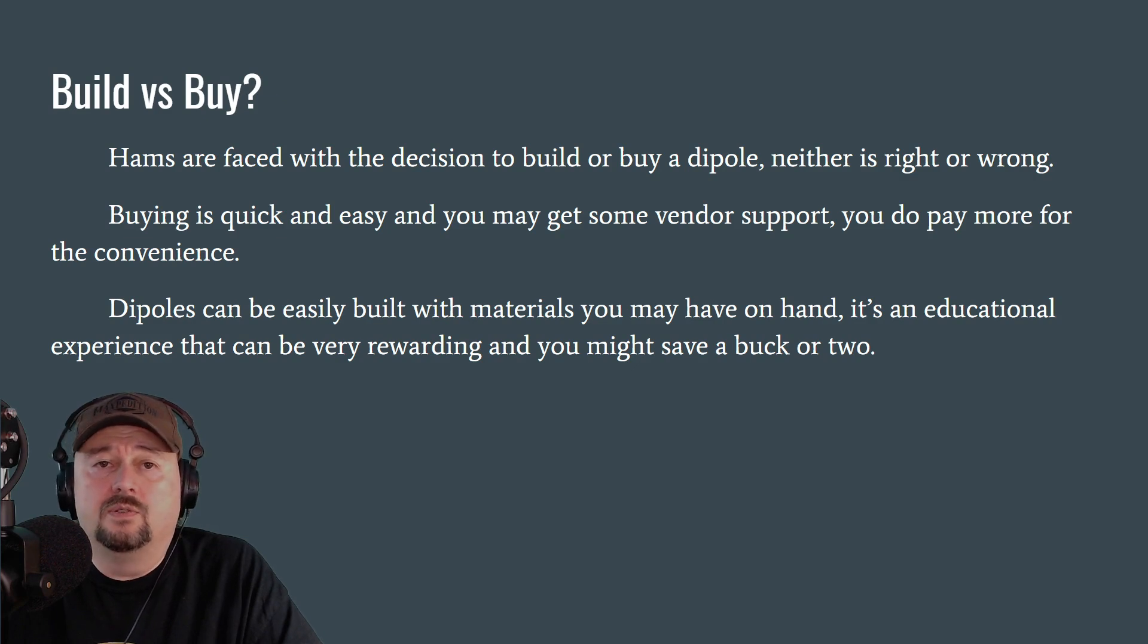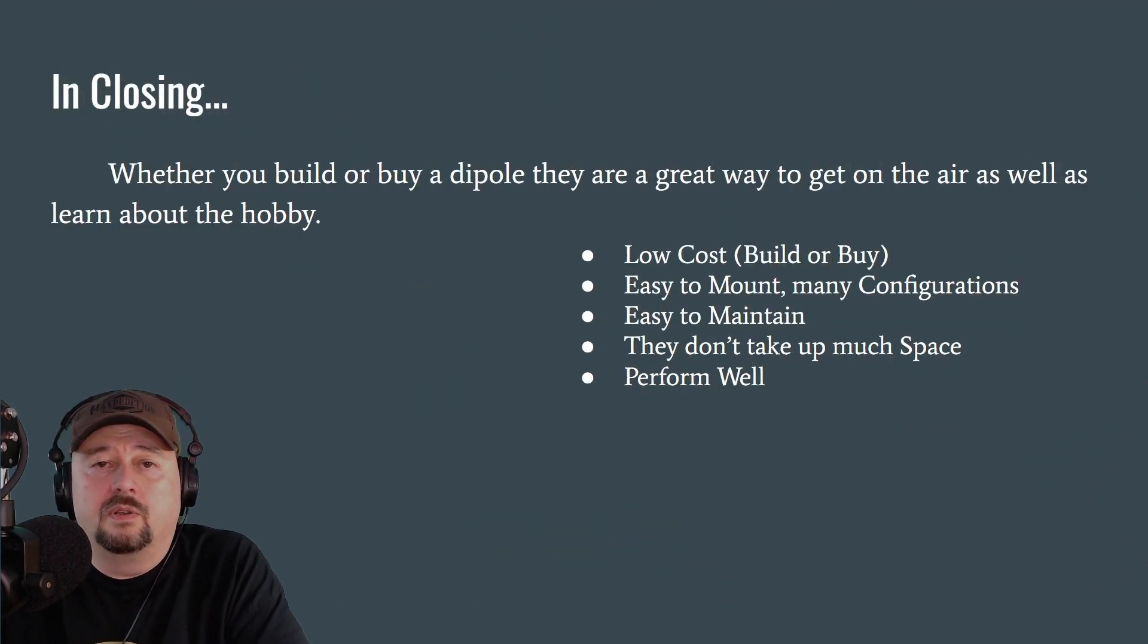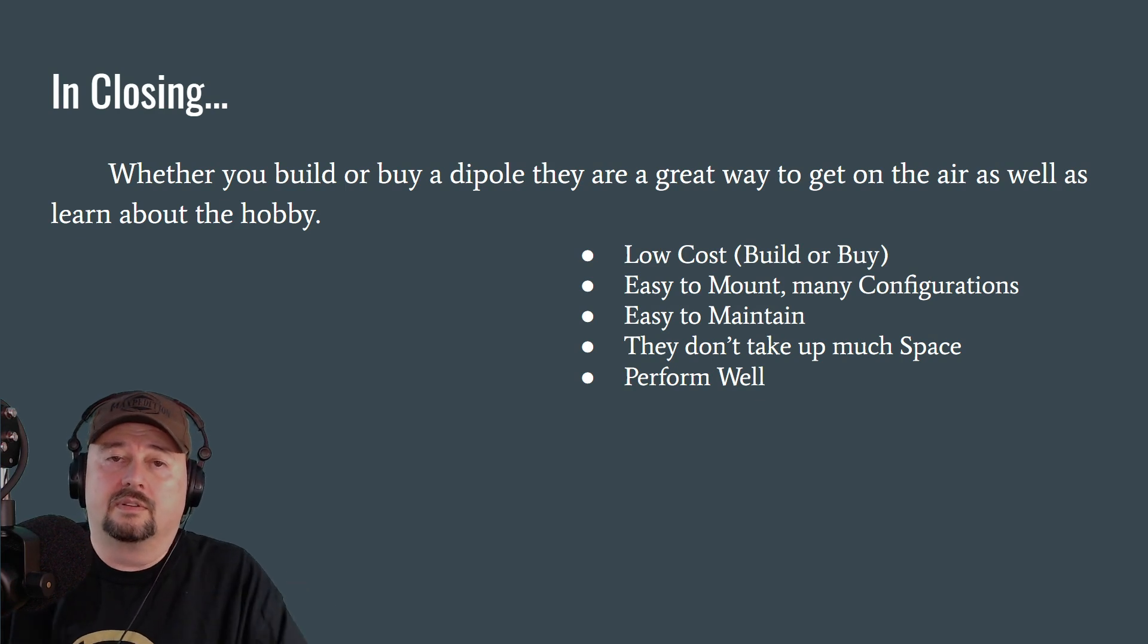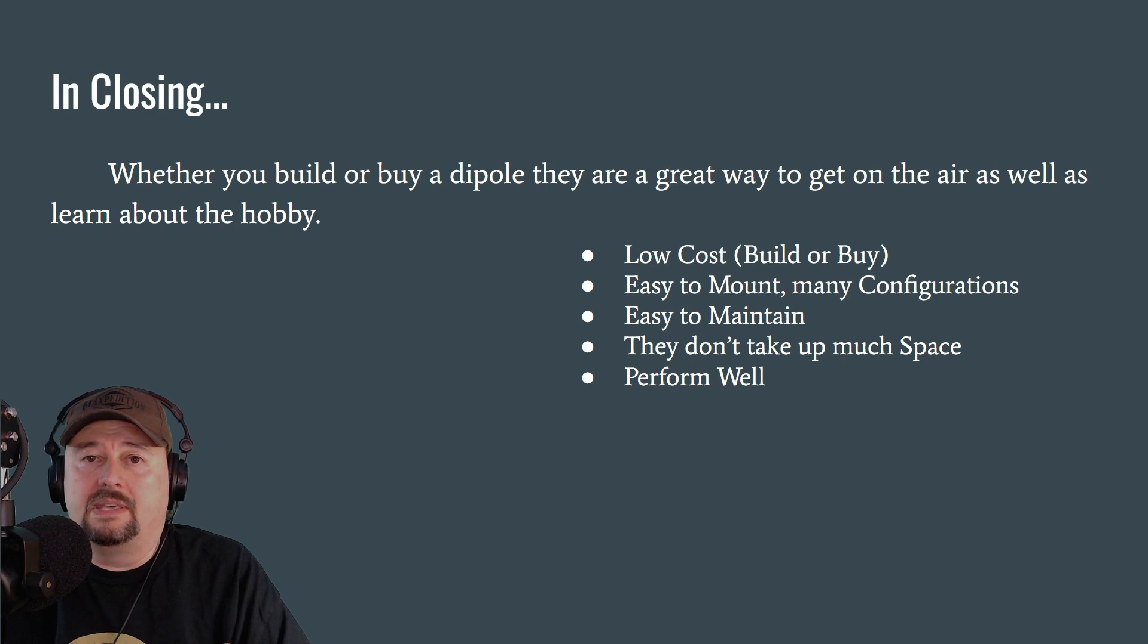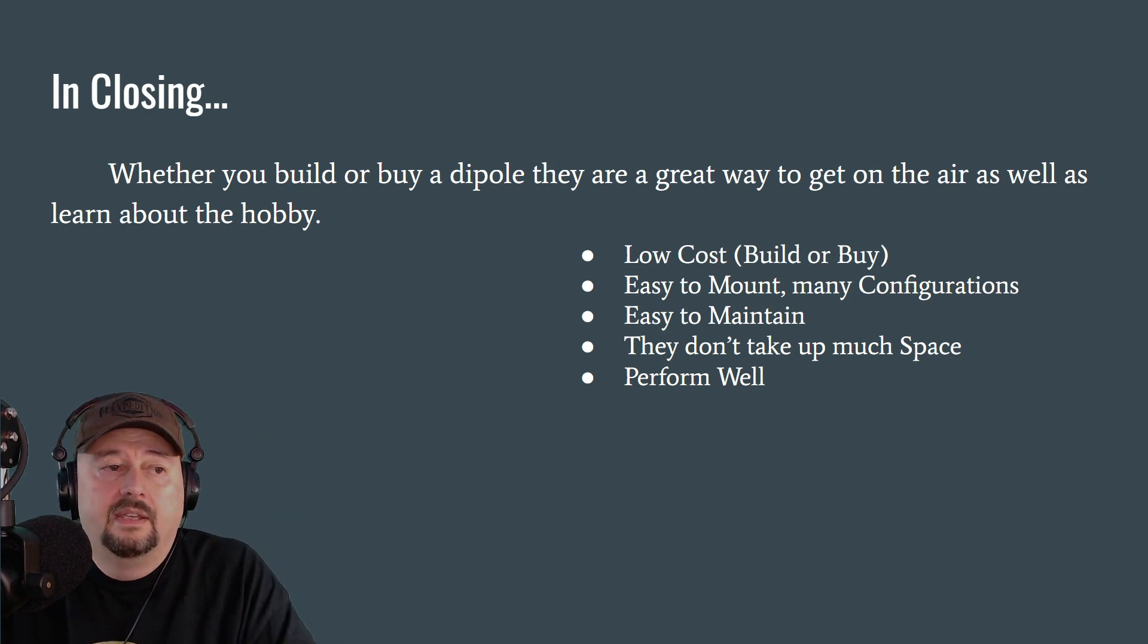So, again, dipoles are relatively inexpensive. They're easy to use. They're highly efficient, and there's a reason why they're the reference antenna, because they're efficient. Whether you build it or buy it, just go out and get yourself an antenna and get it on the air. So I wanted to close out the conversation. Now, whether you build or buy a dipole, they're a great way to get on the air, as well as a great way to learn the hobby. As mentioned, they are low cost, whether you build it or buy it. They're easy to mount, and there's many configurations, and we talked about that versatility earlier in the slide deck. They're easy to maintain. If your dipole breaks, you just get another element and you put it on there. You will have to maybe buy some connectors and stuff like that, but they're very simple in nature. They don't take up much space, and that is a very positive thing. Now, when you start talking about giant dipoles, like 80-meter dipoles, they're going to take up more space because they're longer. They're going to require more space to do that run. But it's not like it takes up a whole bunch of space in your yard. It's just in the air above you, and you'll need a place to mount that. And they perform well.